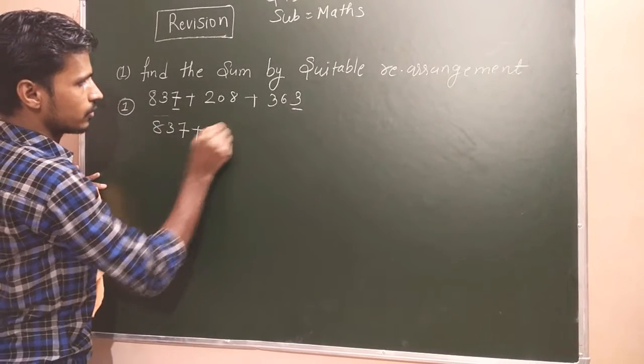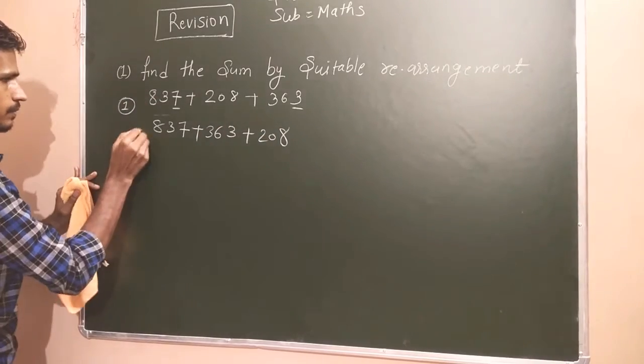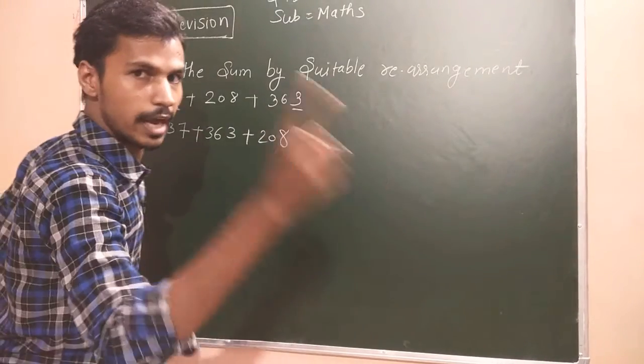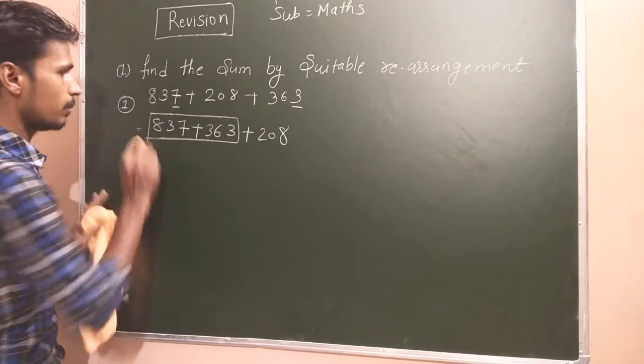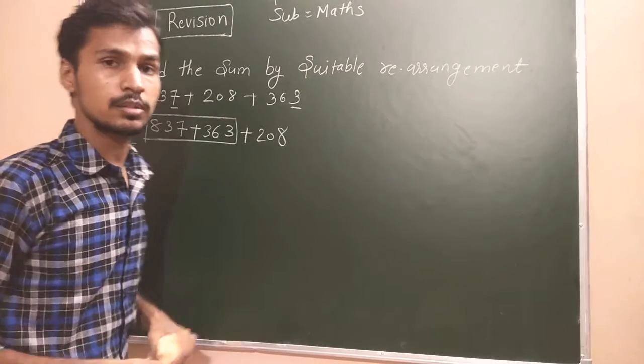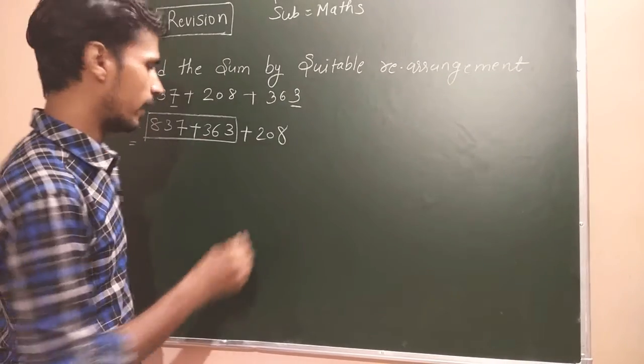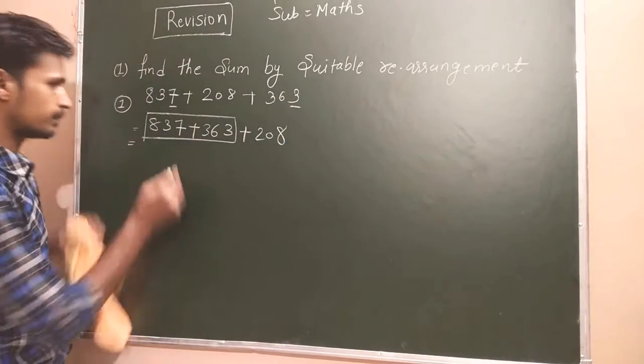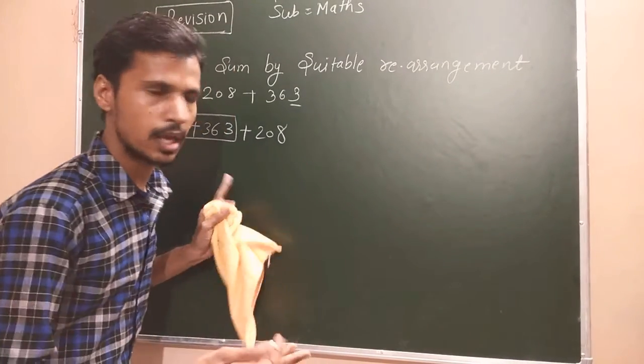837 plus 363 plus 208. Now students, I am adding first these two values because it will give us 0 in the unit value. Add the plus of unit values. Now add this sum. If you don't know how to do this, I am doing here.